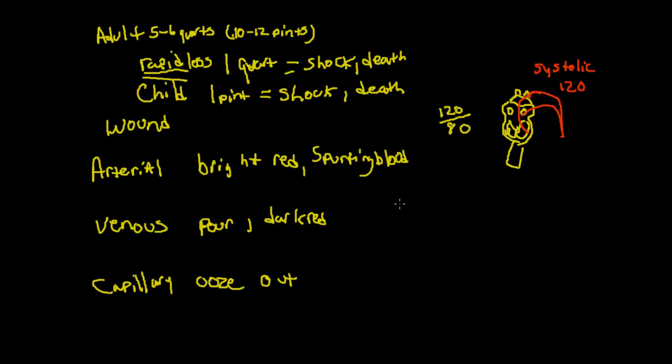When the heart contracts, that systolic pressure, that's at 120 we were talking about. You notice here this pressure is much higher than the 80, because when the heart relaxes and the blood is returning to the right atrium, this diastolic pressure is the pressure on the arterial walls.